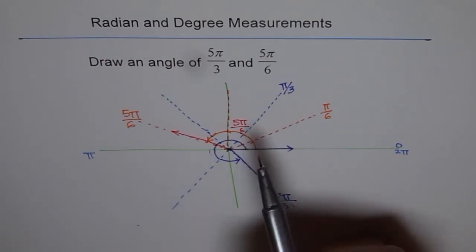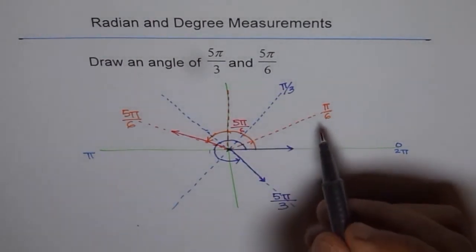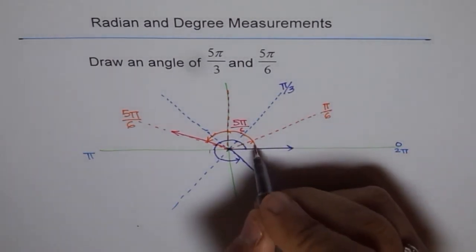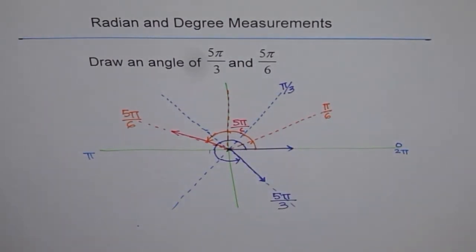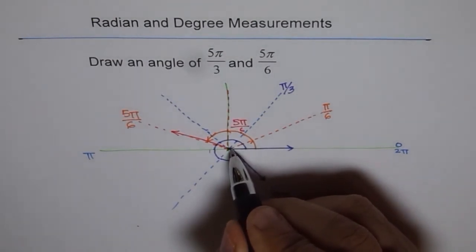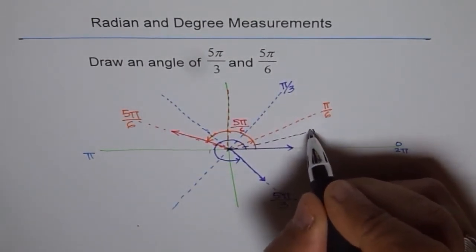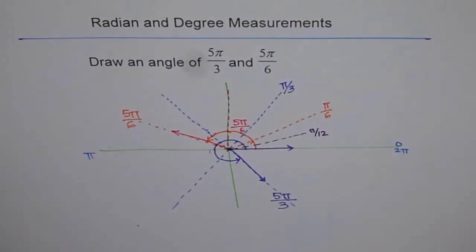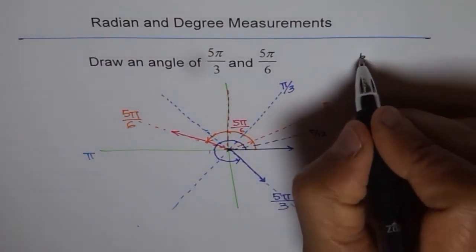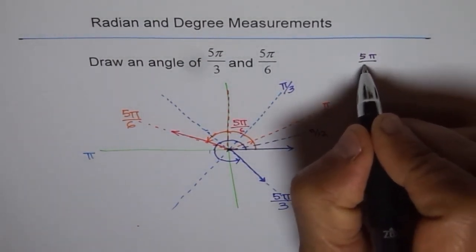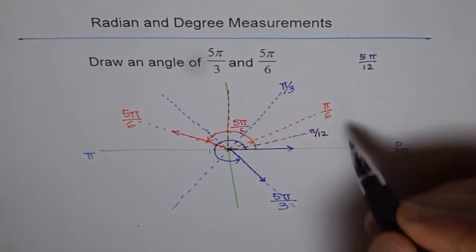And you can always bisect them to get further. For example, what is π/12? π/12 will be here. Let me draw π/12 for you here. So easy. That one will be π/12. As an exercise, try drawing 5π/12 and let me know in which coordinate will this fall.